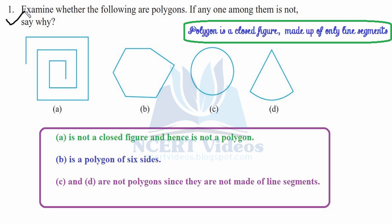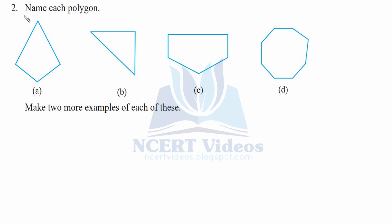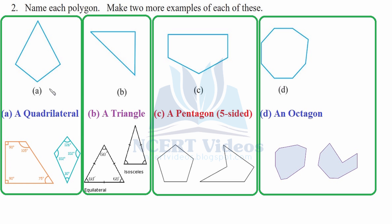Question two: name each polygon. We have to name these polygons; they have particular names based upon the number of line segments. Also make two more examples of each. The first one is a quadrilateral because it has four sides. Two examples are a kite and a trapezium.